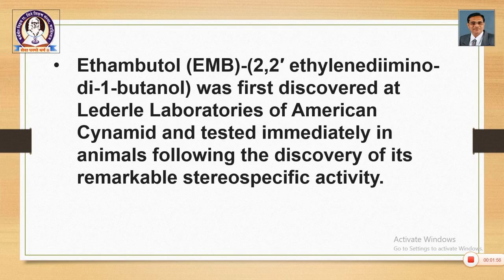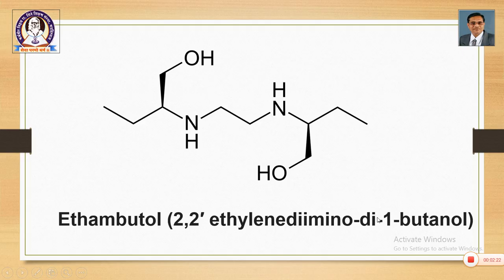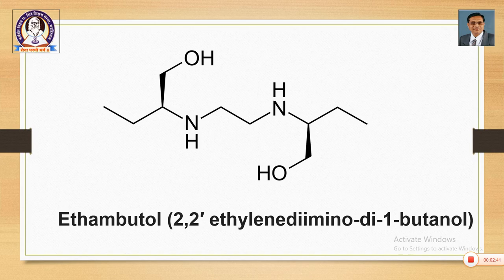It was actually discovered as part of a research project. This is the general structure. As mentioned, it is 2,2'-ethylenediimino-di-1-butanol. These two carbons and these two NH groups make up the ethylenediamino portion, and the di-1-butanol refers to the OH groups of the two butanol parts. So it is a condensed product of an ethylenediamino group with two butanol structures.